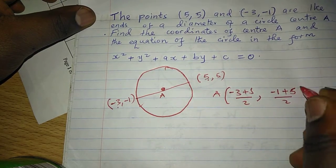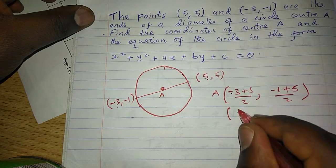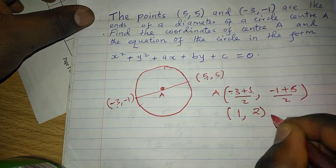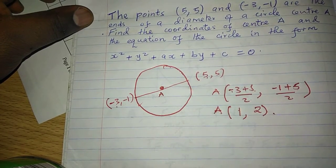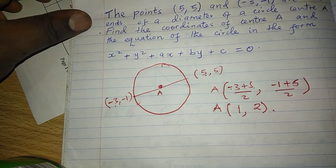divided by 2. Such that now, the coordinates of A will be 2 divided by 2 which is 1, and 4 divided by 2 which is 2. So the coordinates of A are (1, 2).